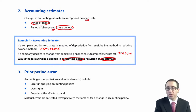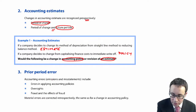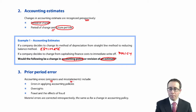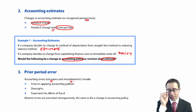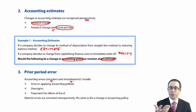The last section is prior period errors. Errors occur from either omissions — where you fail to record an entry — or misstatements, coming about from the wrong number being processed. They can arise from applying accounting policies incorrectly, from oversights where something has been missed, or from fraud and any potential impacts of fraud. All of these are considered as errors.